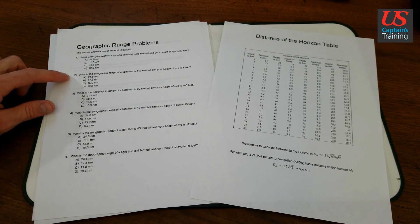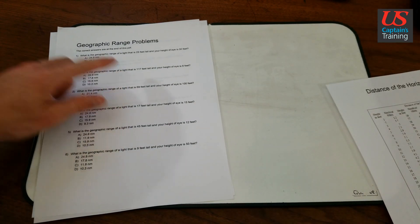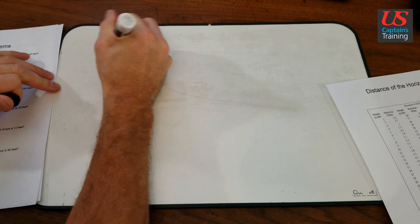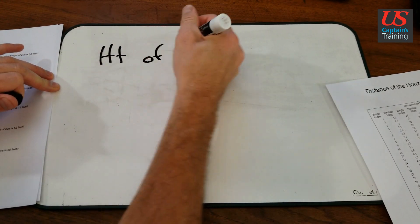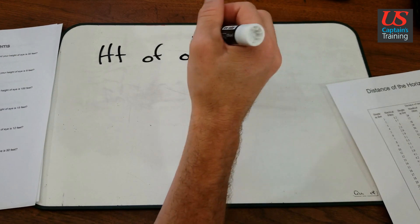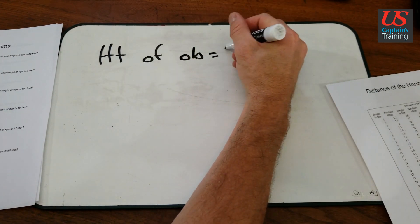Let's look at this. So we need the height of the object, which is the light. Height of object equals 117 feet.